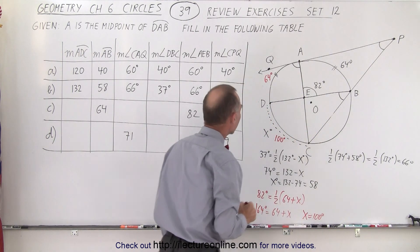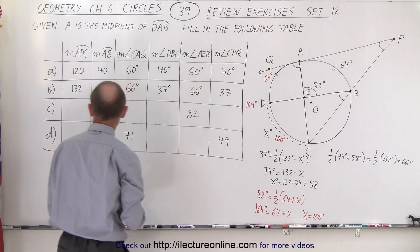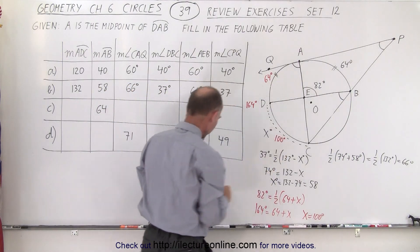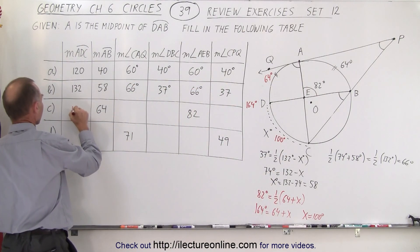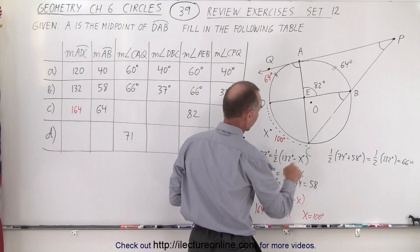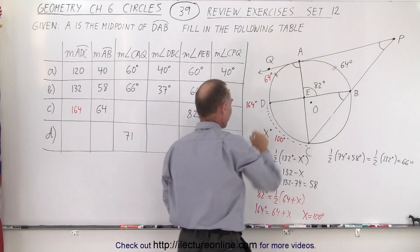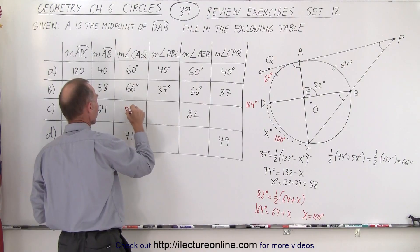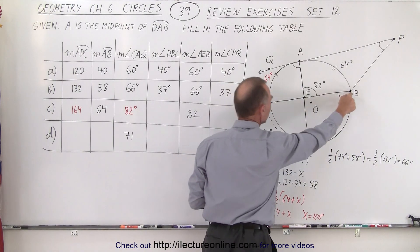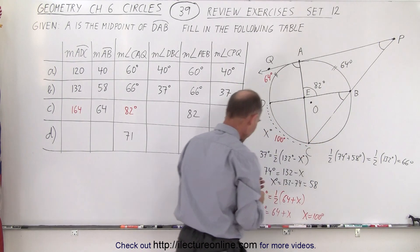So the two arcs combined would be 164 degrees. Now for part C, the measure from A to D to C is the sum of these two, which is 164. The measure from C to A to Q would be half this measure of 164, so half of that would be 82 degrees. The measure from D to B to C — that's this angle right here — would be half of 100, which is 50 degrees.